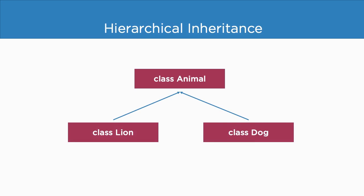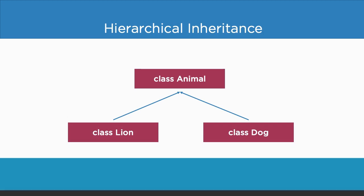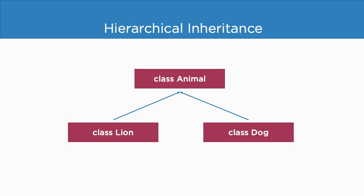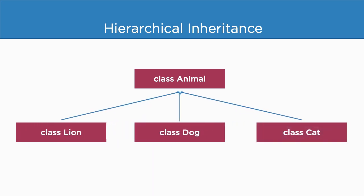The next type of supported inheritance is hierarchical inheritance, which we already saw in our demo. In this type of inheritance, there is only one superclass and we can have multiple subclasses — right now we have two, but you can have as many subclasses as per your requirement.